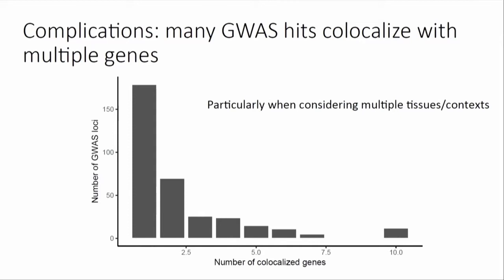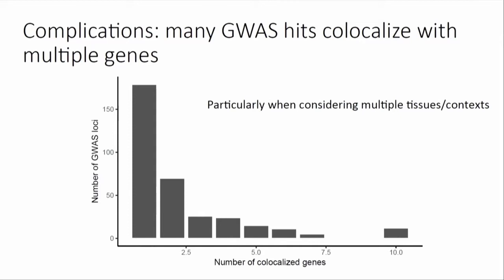There are additional complications even after you try something like this. Our nice picture where EQTL analysis and co-localization completely disambiguates our locus and points to a single target gene turns out to not be true in many cases. Often these GWAS hits co-localize with multiple genes, so there remains ambiguity of what the gene target is — or maybe there are actually more than one relevant gene target. This is particularly true when you start looking across many tissues or many contexts. In some cases you will get a hit that co-localizes with one gene in brain and a different gene in liver.